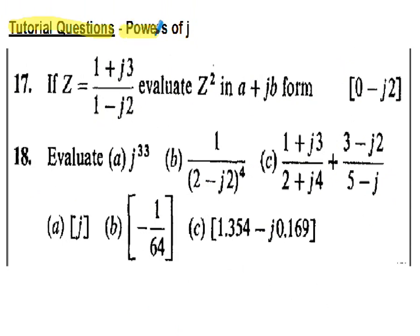Question 17: given complex number z equal to 1 plus j3 divided by 1 minus j2, evaluate z squared in the form a plus jb. Multiply top and bottom by the complex conjugate of 1 minus j2, which is 1 plus j2. Expand the brackets and simplify. The answer is shown in the square brackets.